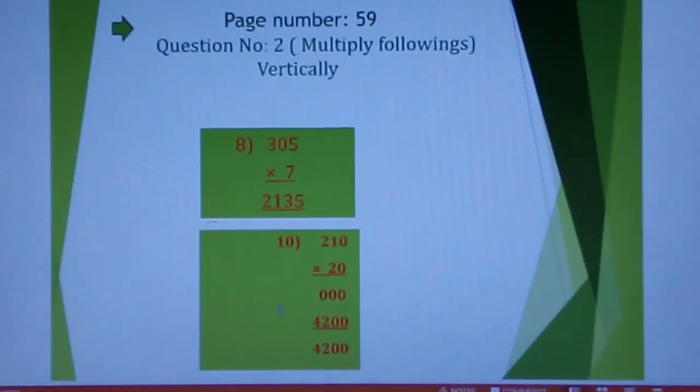Second time, 210 multiply with 2. 2 zeros are 0, 2 ones are 2, 2 twos are 4. Now if you add it, it will be done.